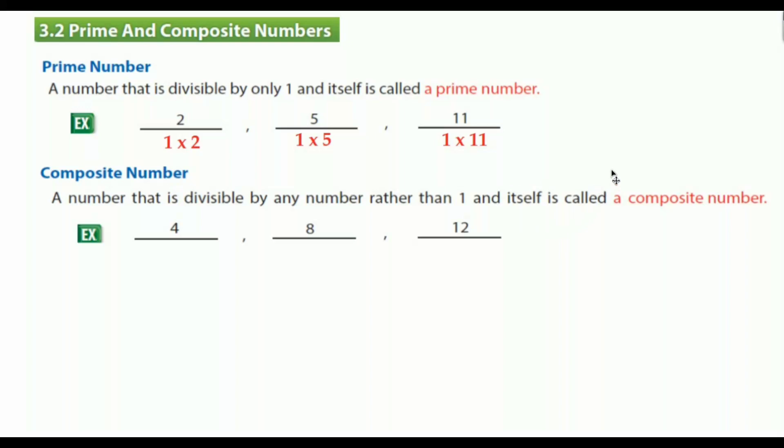We have examples: 4, 8, and 12. Let's understand clearly. How many factors does 4 have? Let's look at 1 times 4 and 2 times 2. So we have 1, 2, and 4 as factors.